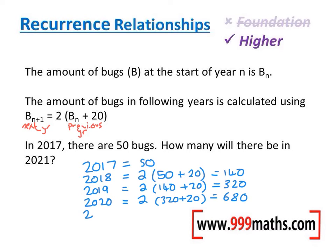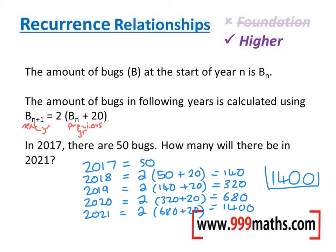And finally we'll do 2021. 2 lots of the previous year add 20. Well 680 add 20 is 700, doubled is 1400. So the answer to the question is 1400 — that's how many bugs this model or prediction says are in the nest or colony at that time.